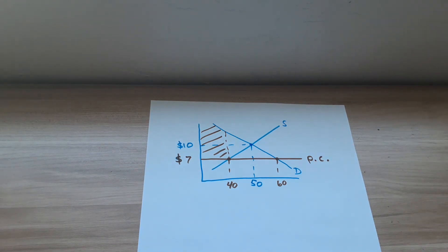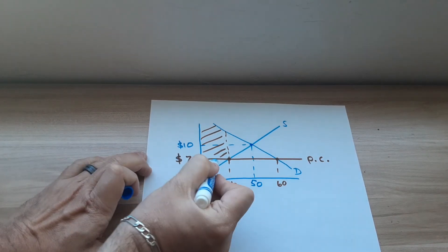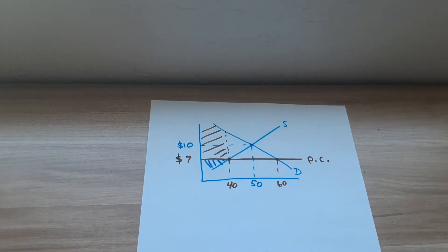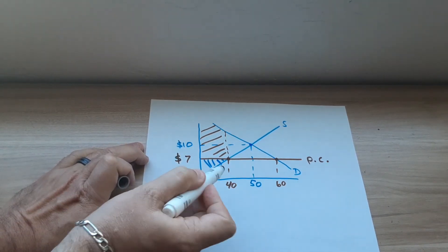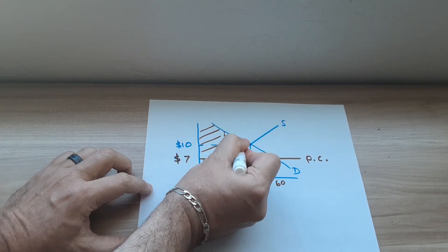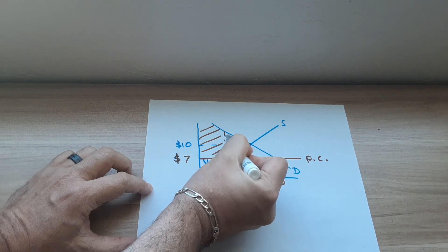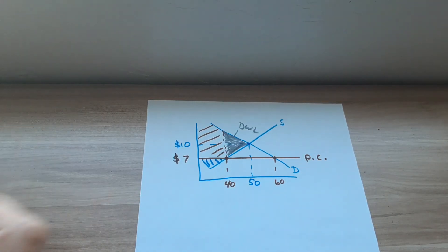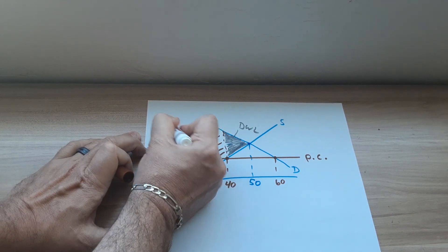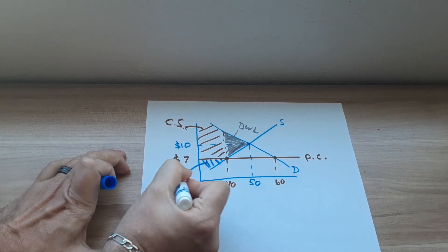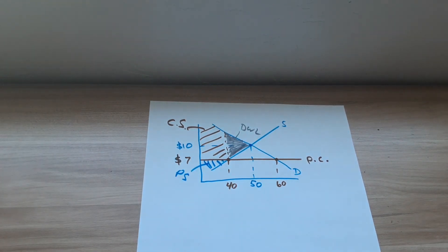The producer surplus is above the supply curve but below the price, staying within the 40 units — so that's just this small area here. Nobody got the other 10 units. There used to be 50 bought and sold; now there's only 40, so there is a deadweight loss. The deadweight loss is all of this triangle — that's the loss of the original producer and consumer surplus, the area of market failure. So the brown area below demand but above the $7 price is consumer surplus; above the supply curve but below the $7 price ceiling is producer surplus.